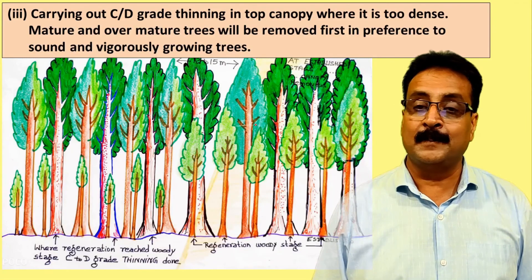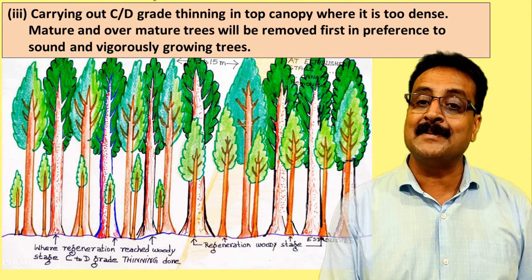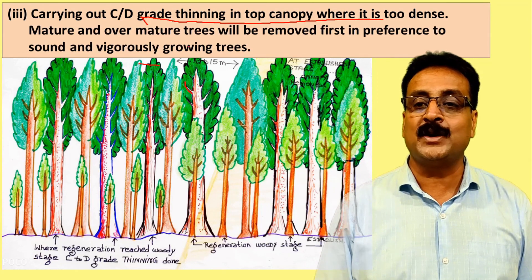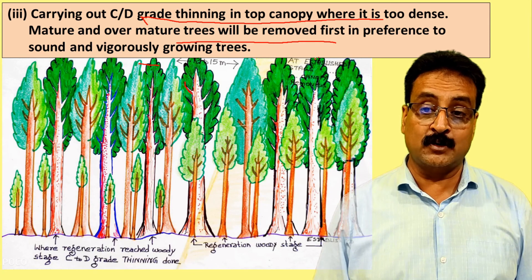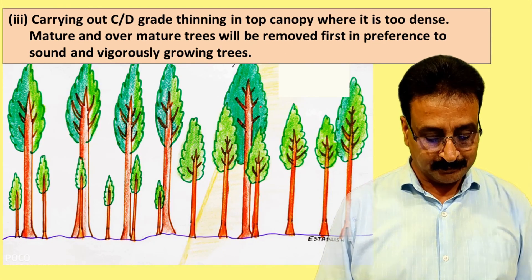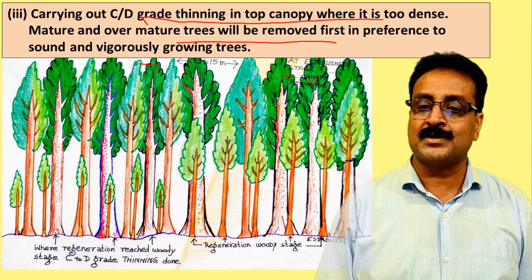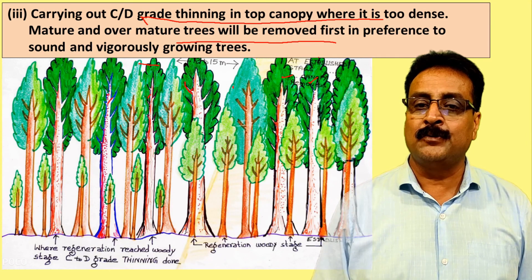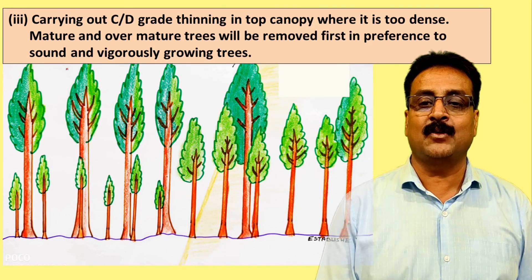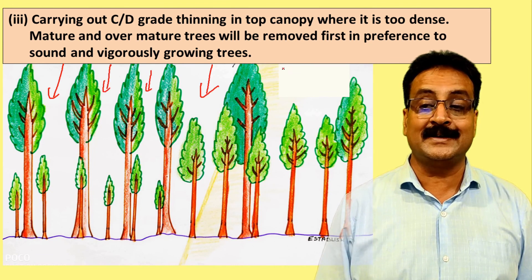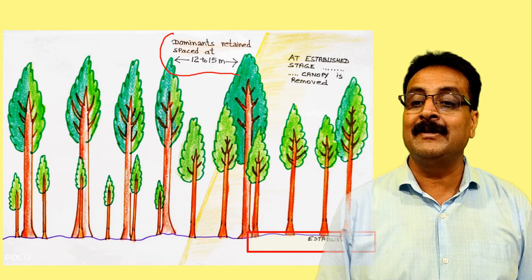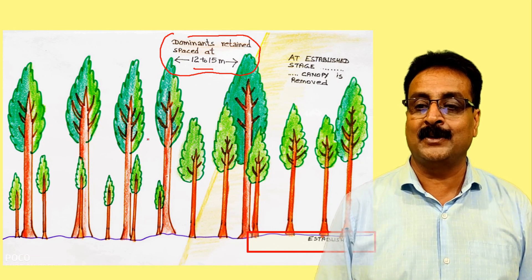After understory removal, a lot of light enters. Then C or D grade thinning is applied to the top canopy, which is very dense. Mature and over-mature trees are removed in preference to sound and good-growing trees. Only dead, dying, or over-mature trees are removed. The spacing given during thinning is 12 to 15 meters, maintaining partial light conditions rather than clear felling.